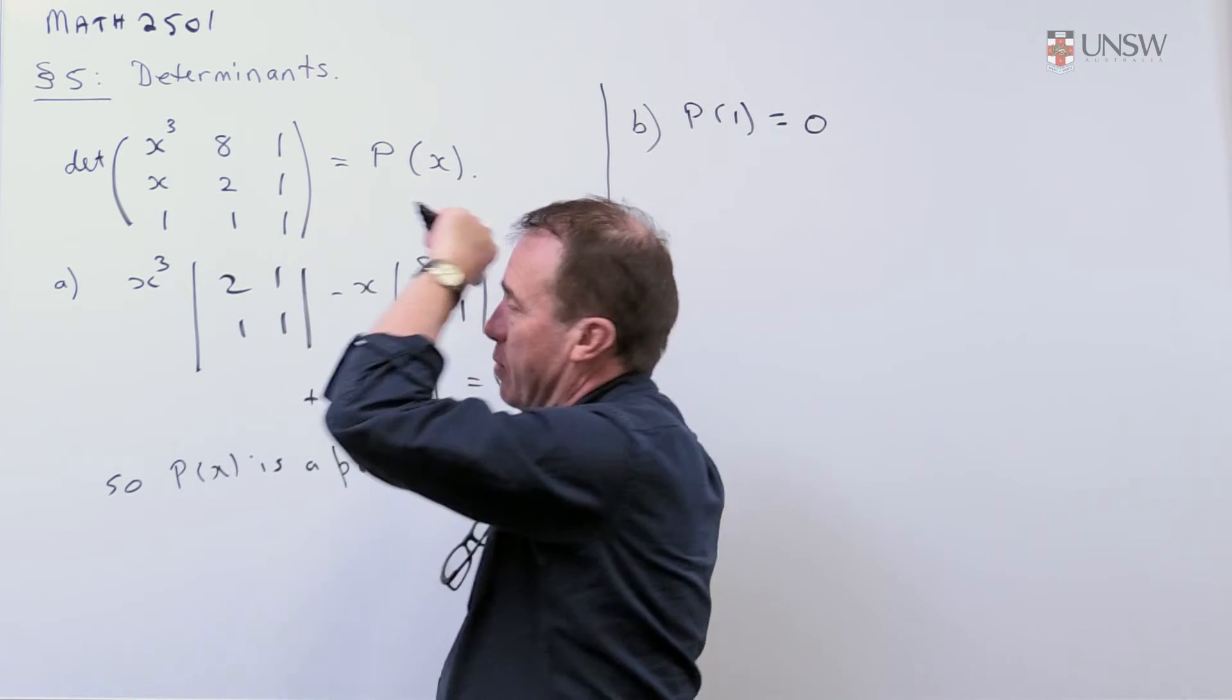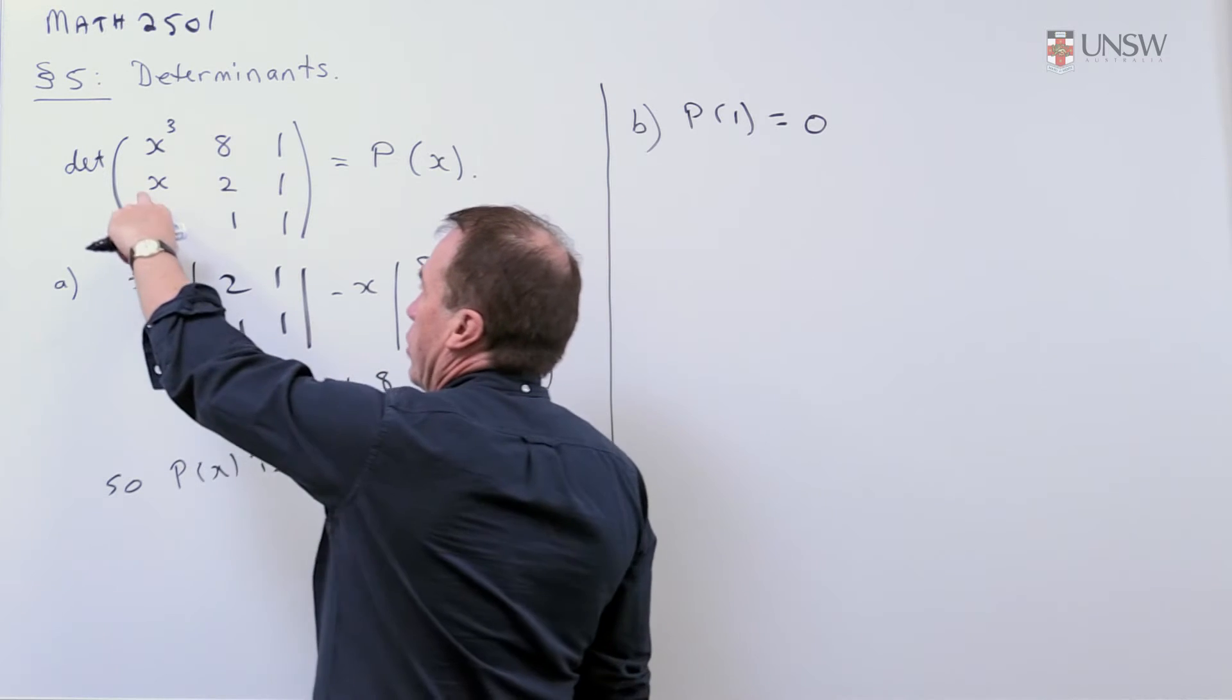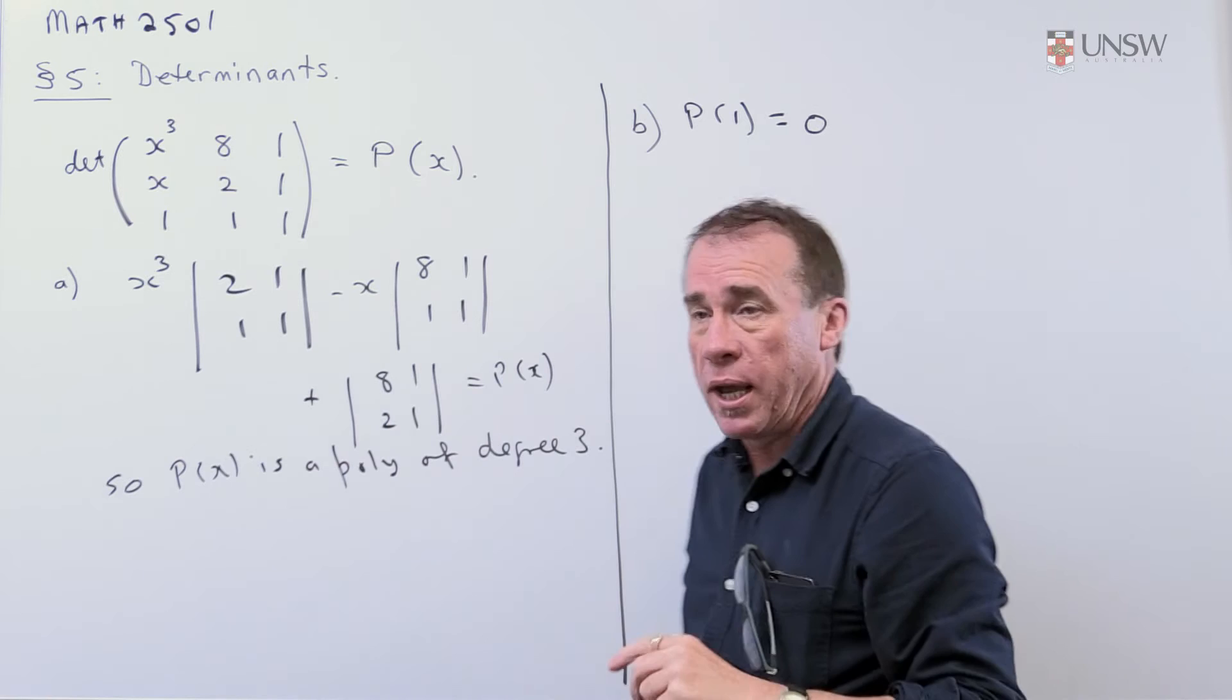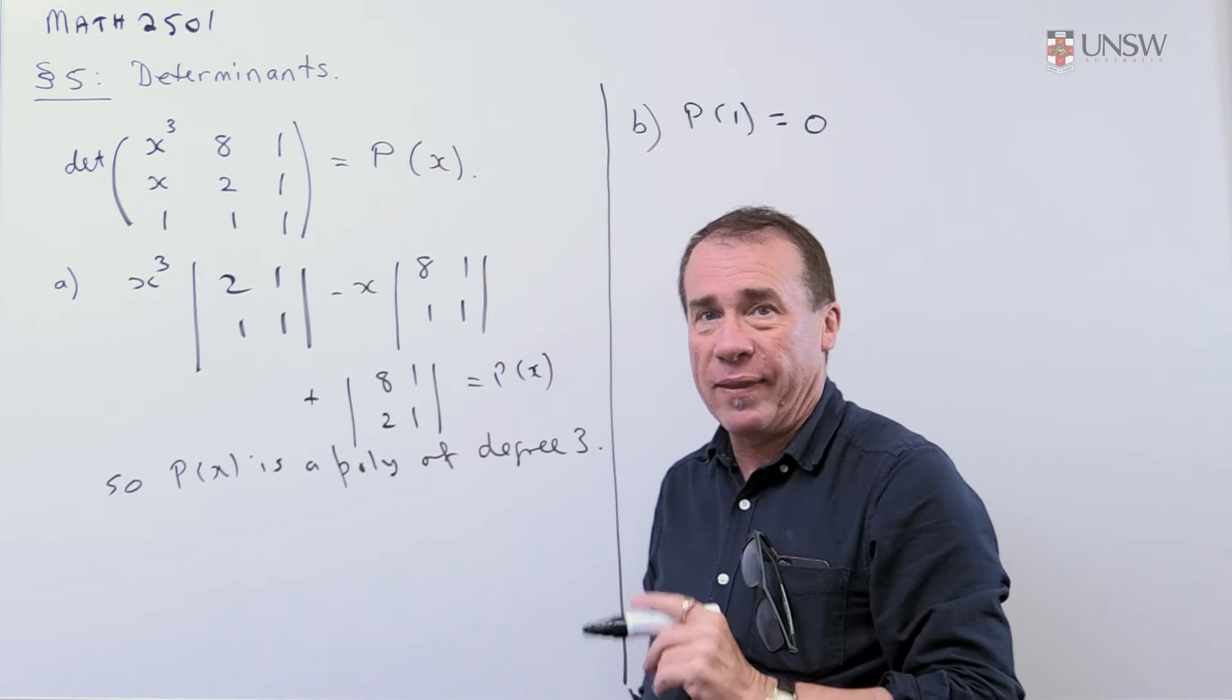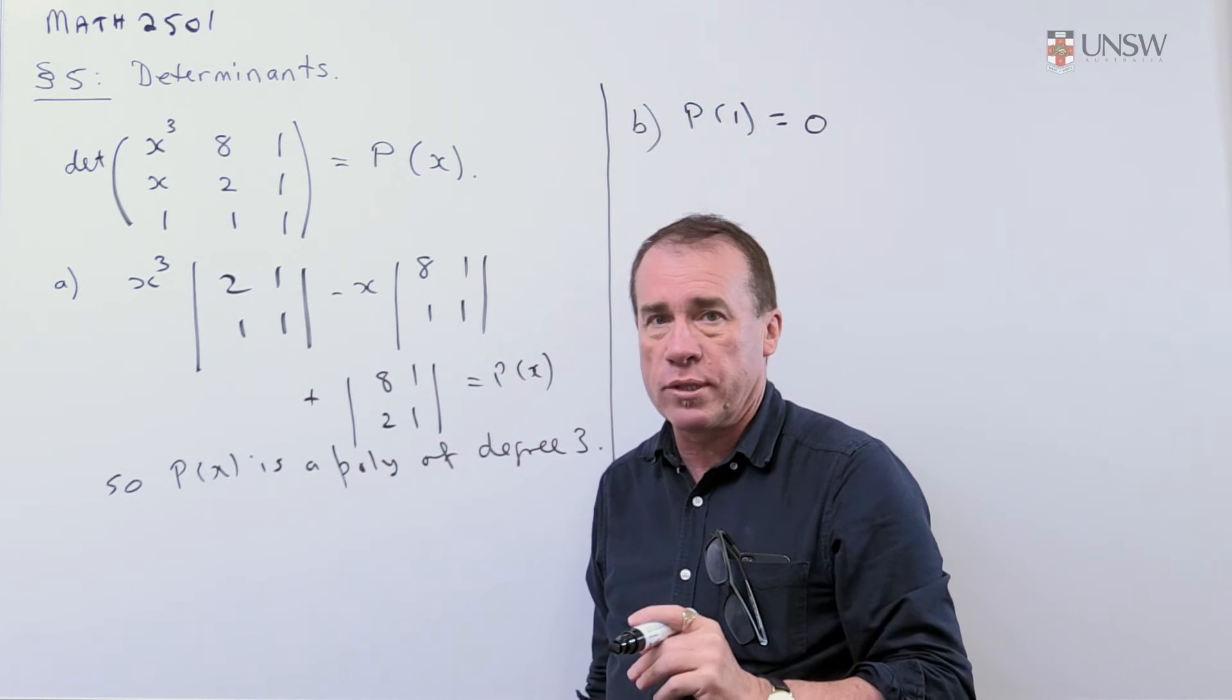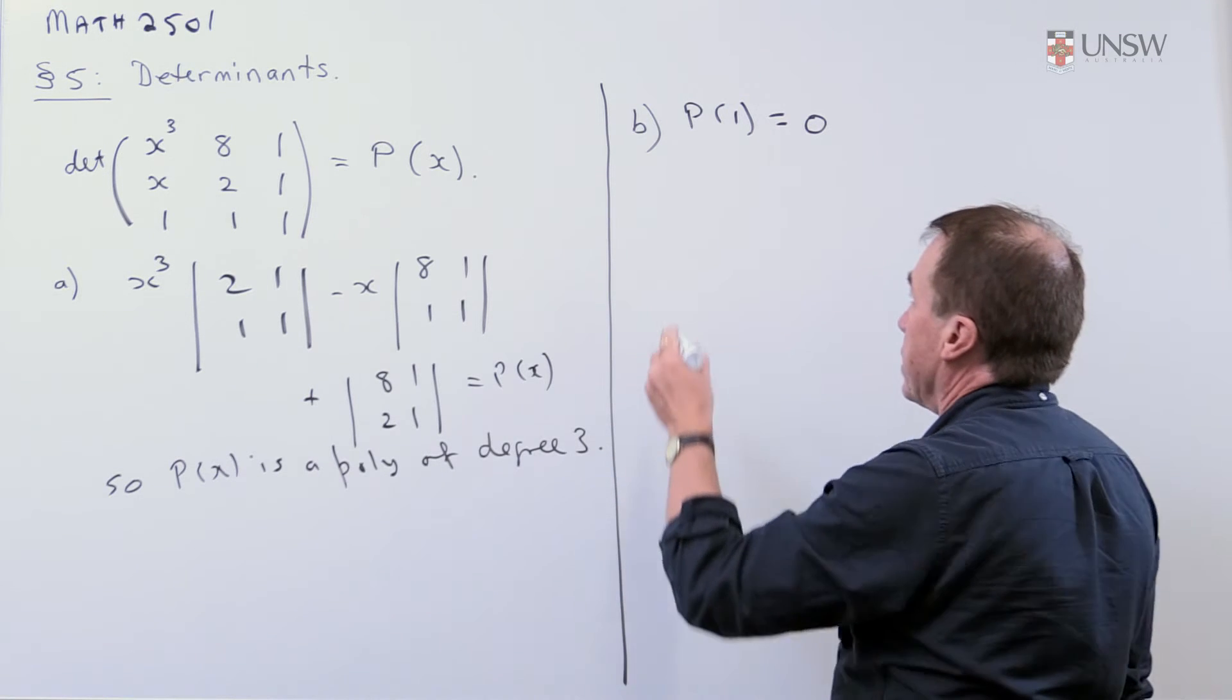And I can see some 2s and 8s, so I might think about 2, and if I put 2 in there, well, I'll get 2 and 8. So the first two columns will be the same, and again, that means the determinant must be 0. So if you've got any two rows or columns the same, the determinant is 0.